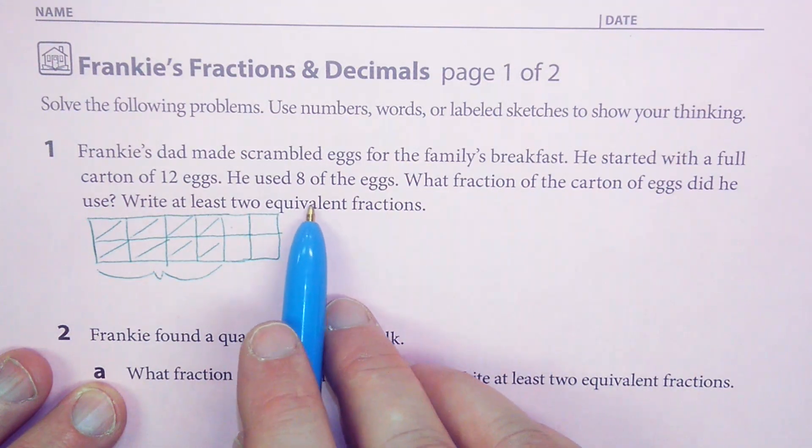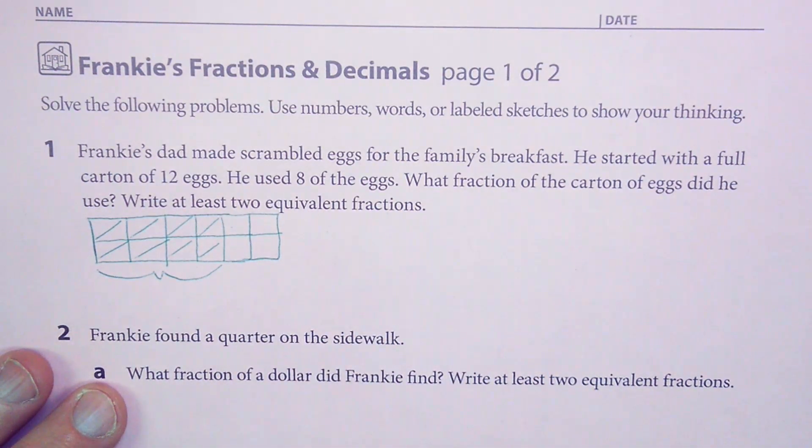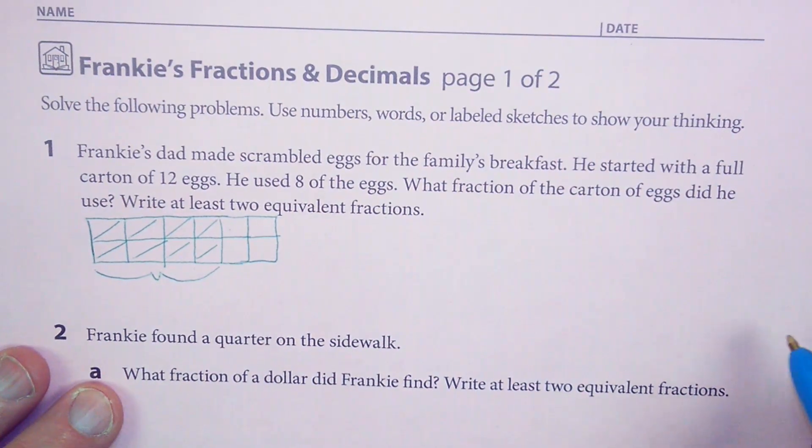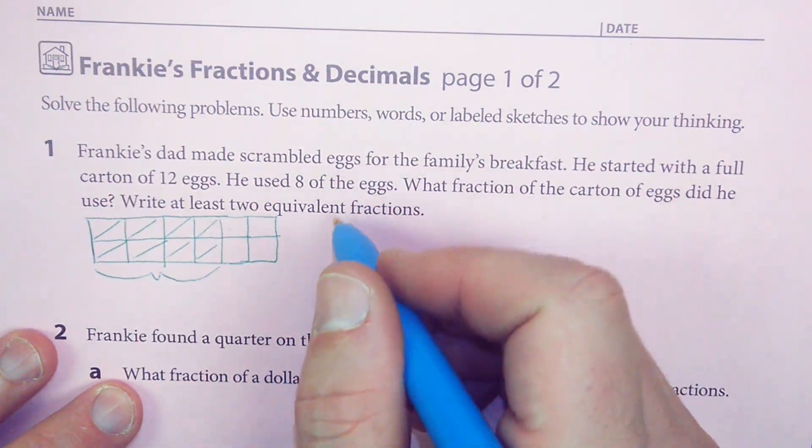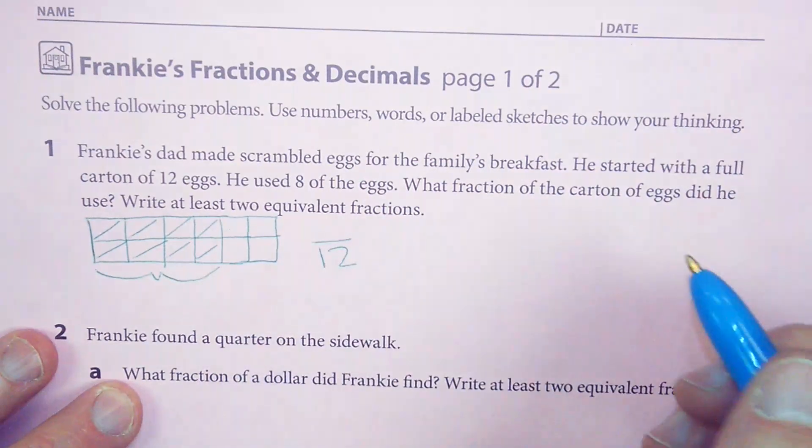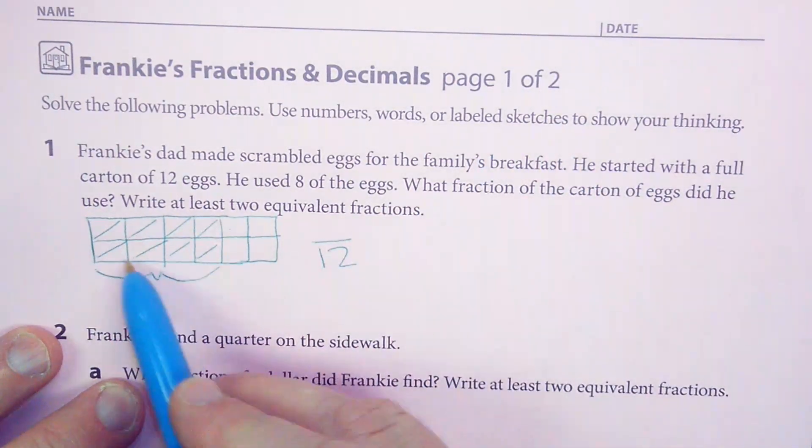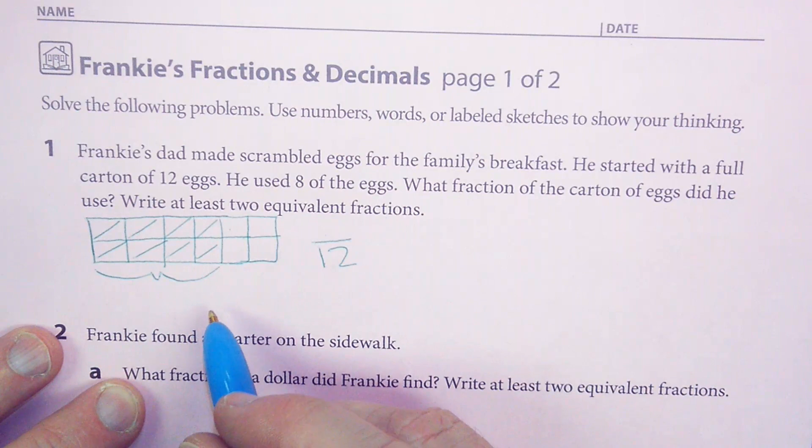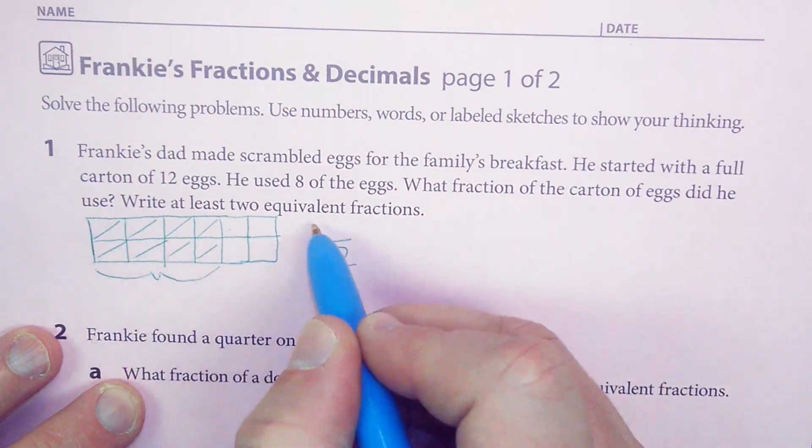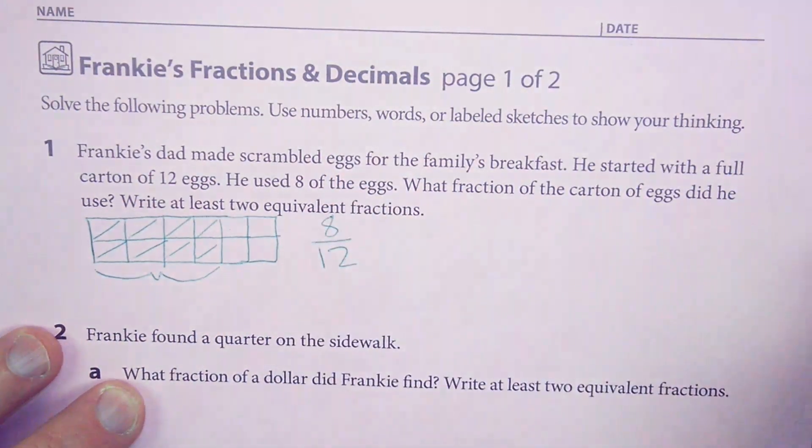And you can write at least two equivalent fractions. I find the best thing to do first is to figure out how many of the 12 eggs were used. Because 12 would be your bottom number, twelfths. And the number of eggs that you used would be the top number. So we could say that would be 8 of the 12 eggs, 8 twelfths.